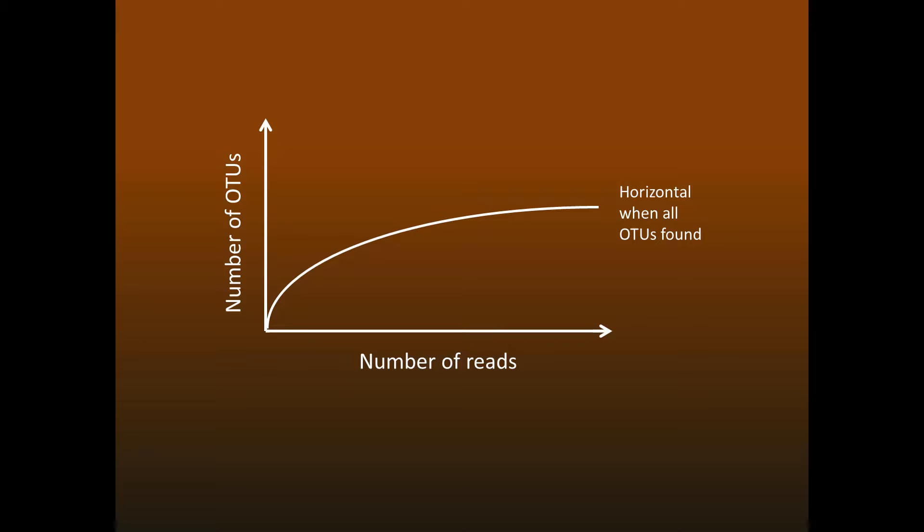However, with next-generation sequencing, we have a big problem with errors, and this gives us two choices. Keep the low-abundance sequences, which may cause many bad OTUs, or discard low-abundance sequences, which may discard many valid species.